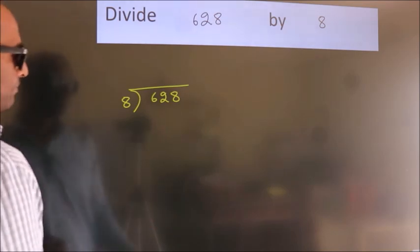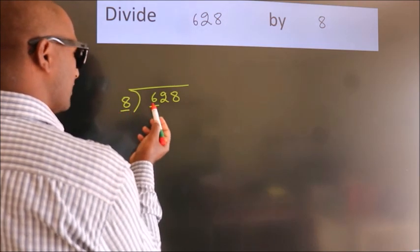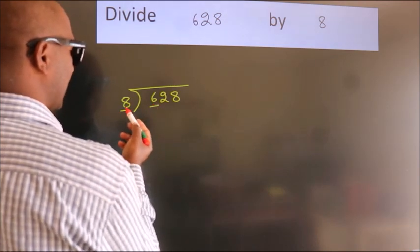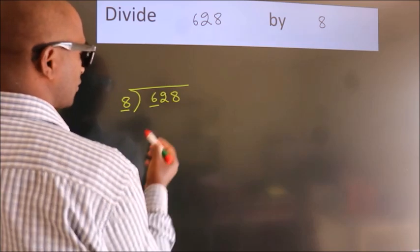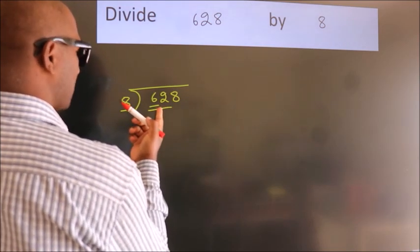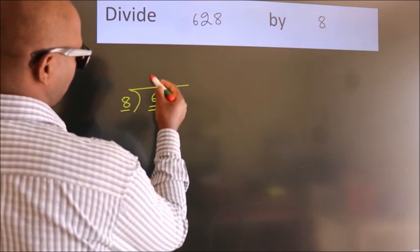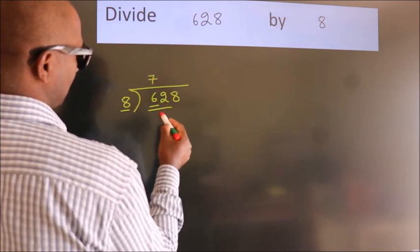Next, here we have 6, here 8. 6 is smaller than 8, so we should take 2 numbers: 62. A number close to 62 in the 8 table is 8 times 7 equals 56.